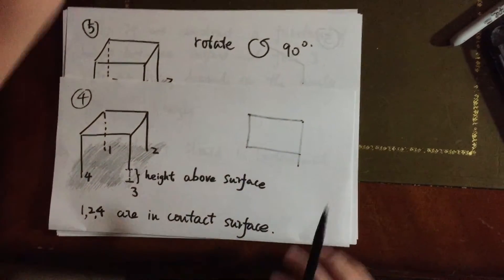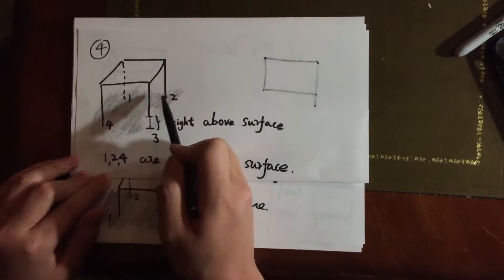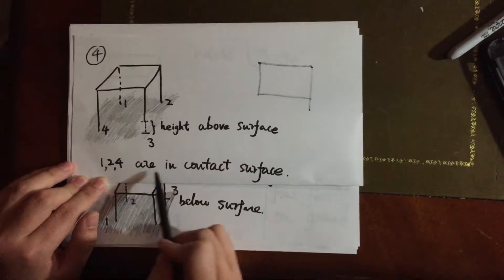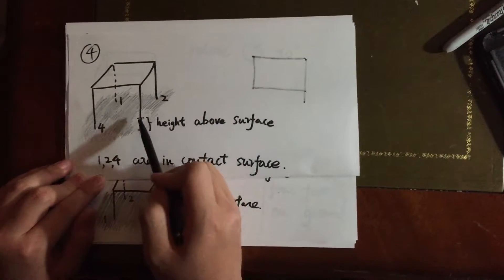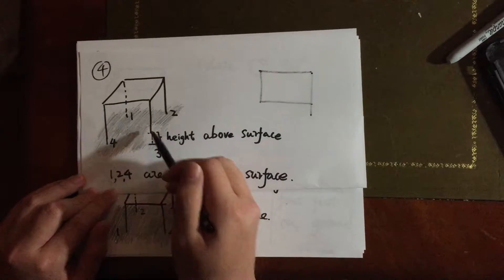So now, let's assume the table has an unequal surface in contact. As we see, 1, 2, 4 are in contact surface, but 3 has a height above the surface, which means the surface and the tip of the foot 3, there's a distance between it.